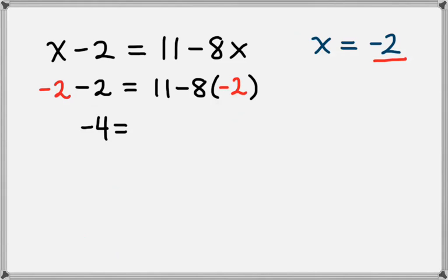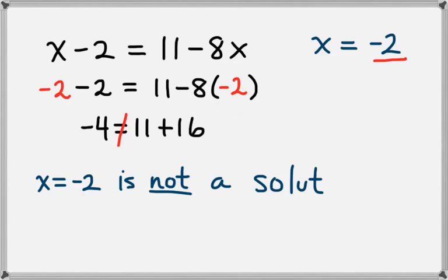On the right-hand side, that leaves us minus 8 times negative 2. Since we have two negatives and we multiply them together, that's going to give us a positive 16. So we have negative 4 equals 11 plus 16. But we know that's not true because 11 plus 16 is 27. So x equals negative 2 is not a solution.